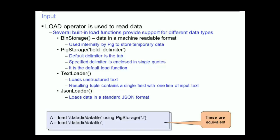The default load function is PigStorage. This reads data that is in a delimited format, with the default delimiter being the tab character. If some other delimiting character is to be used, that character is supplied in single quotes. The TextLoader reads in a line of text, and this line of text is then placed into a single tuple.